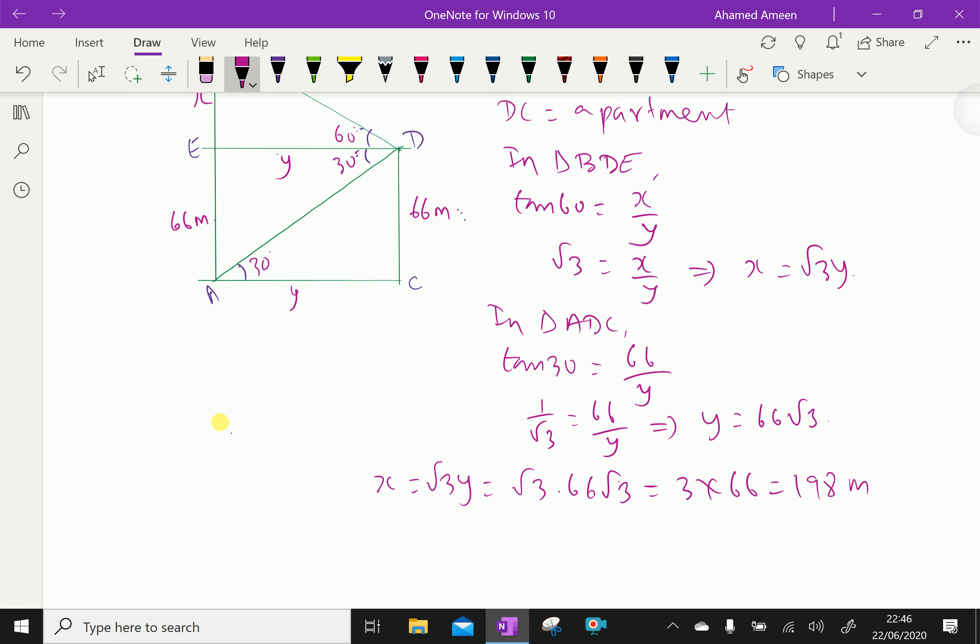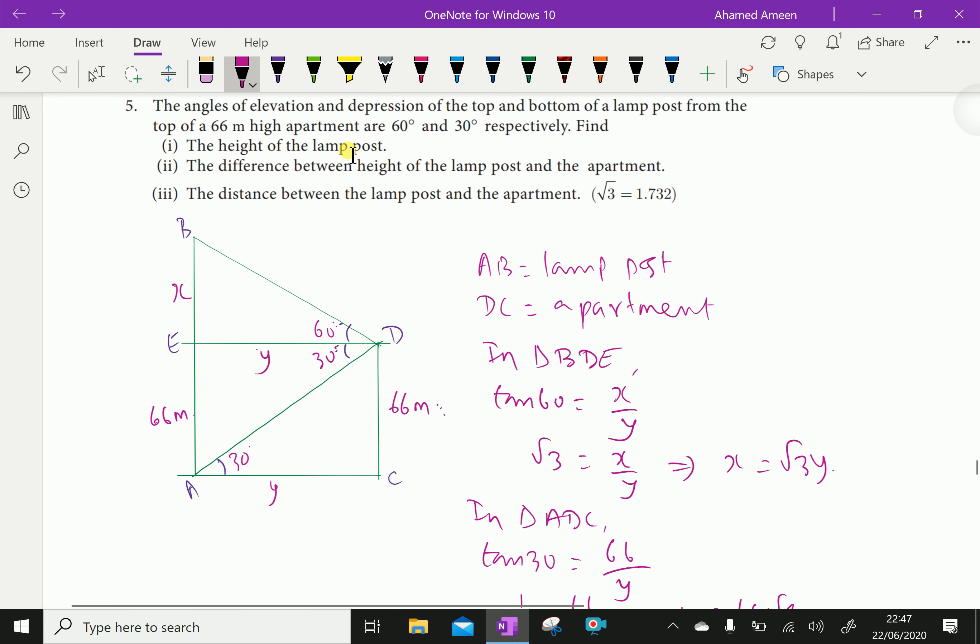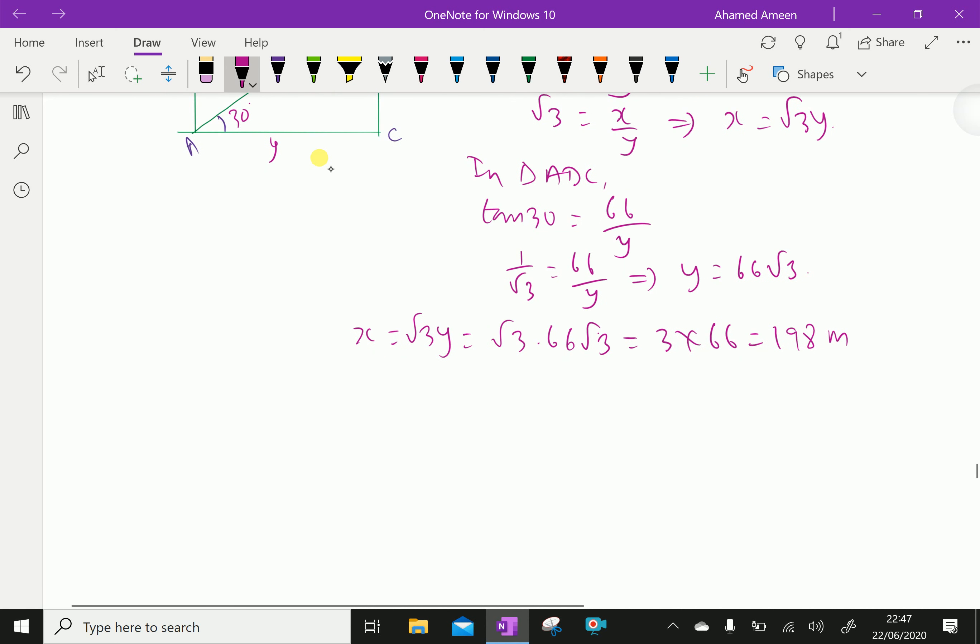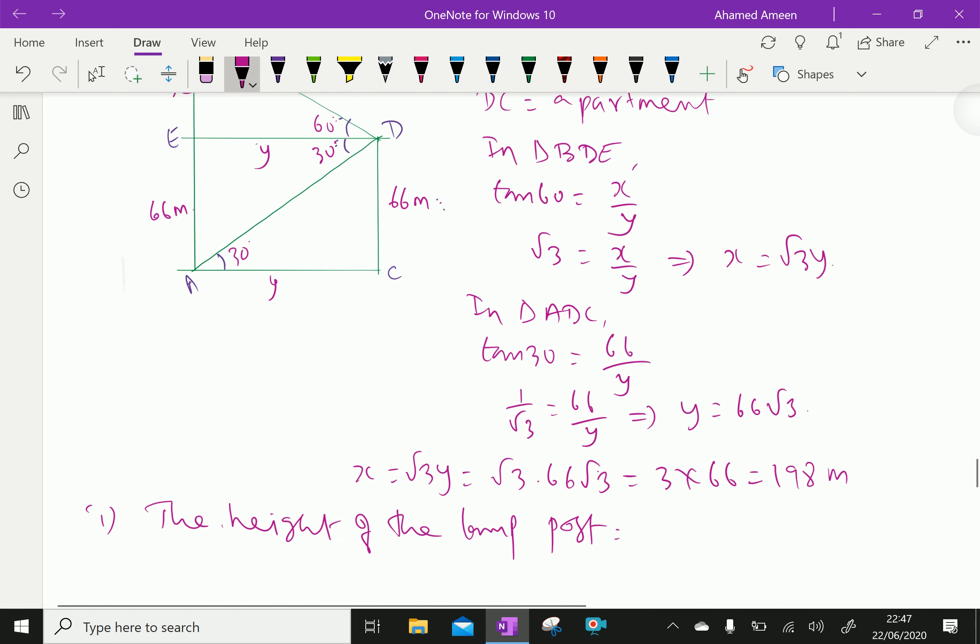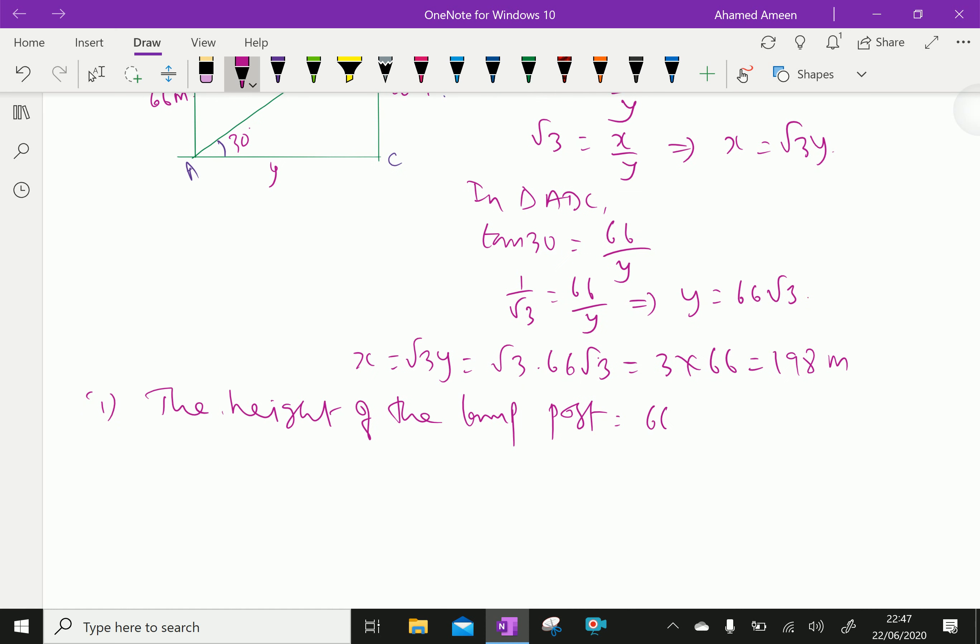Now, we will do the questions. The height of the lamp post is 66 plus X, which equals 66 plus 198, which equals 264 meters.